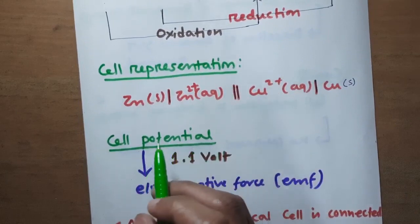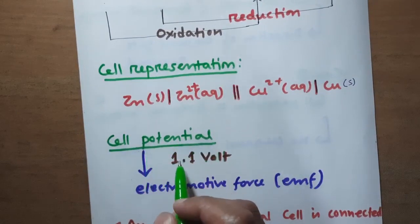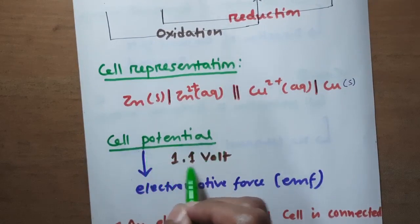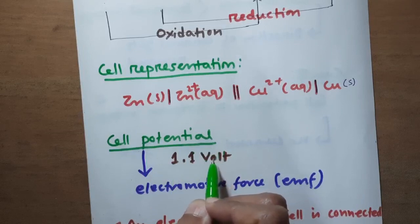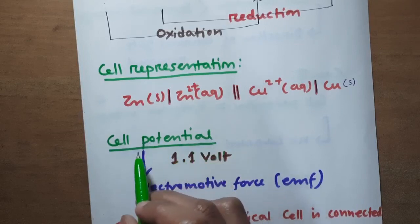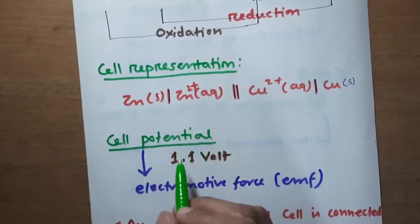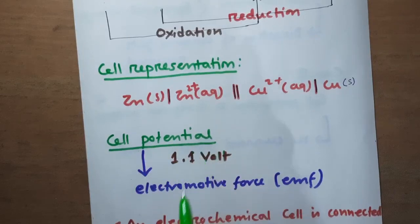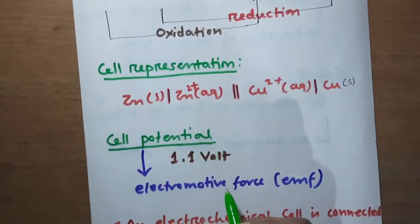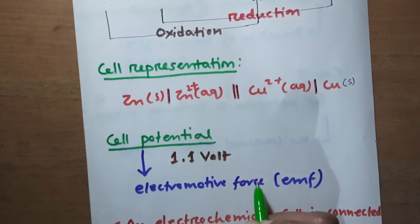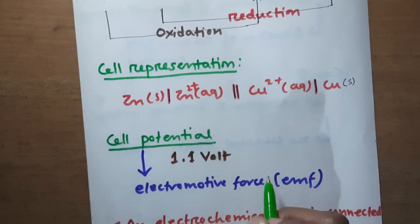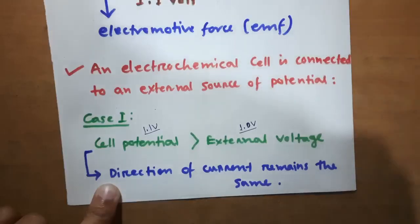The cell potential of this Daniel cell is found to be 1.1 volts. Cell potential is also known as electromotive force, but it is written as electromotive force only when no current is drawn through the cell.